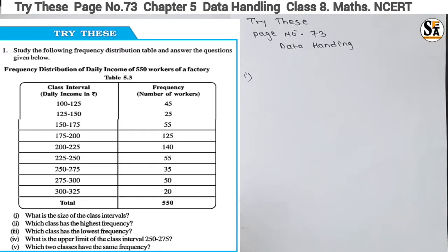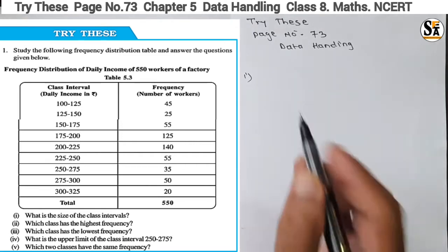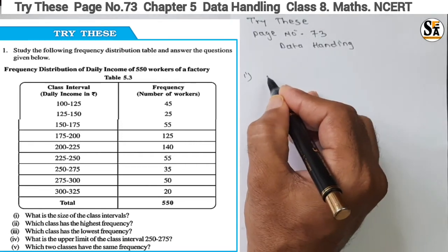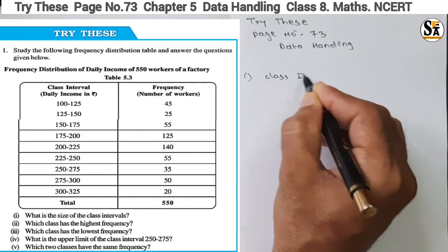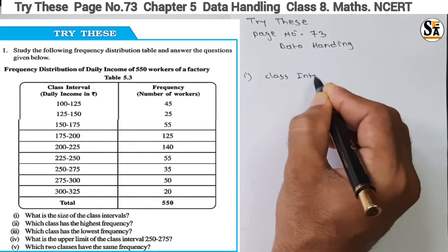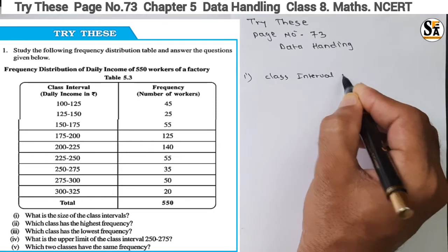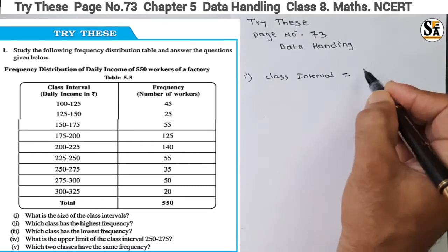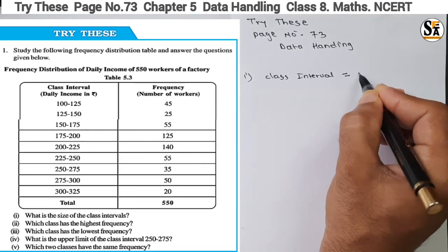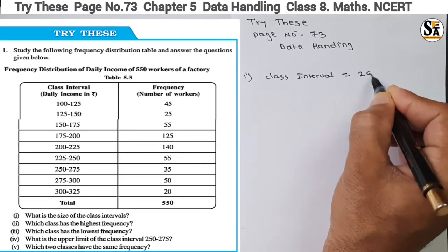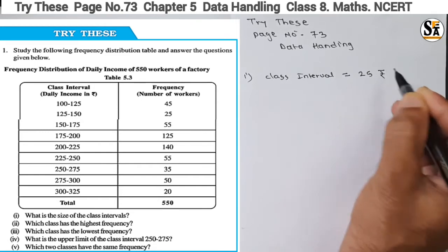Looking at the class intervals: 100 to 125, 125 to 150, 150 to 175 — the class interval size is equal to 25 rupees.